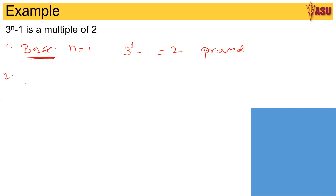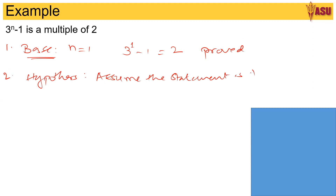The second step is the hypothesis. Assume the statement is true for n, that is, 3^n minus 1 is divisible by 2.